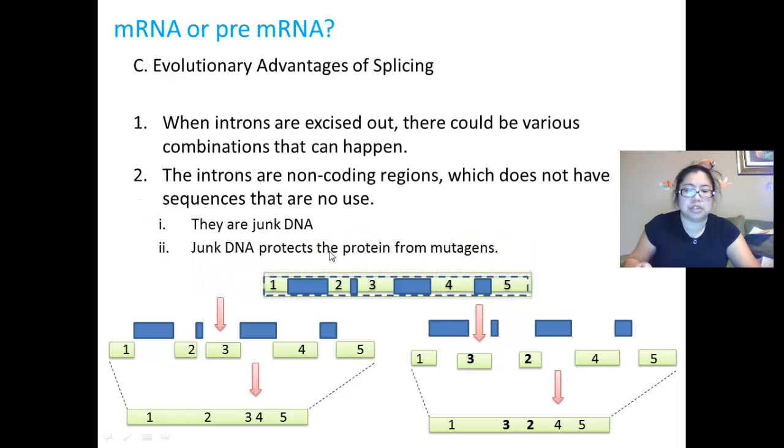Now, the second advantage is that the introns are non-coding regions which do not have sequences that are in use. Basically, they're junk DNA, as I mentioned before. So these dark blue pieces are junk DNA. It protects the protein from mutagens.